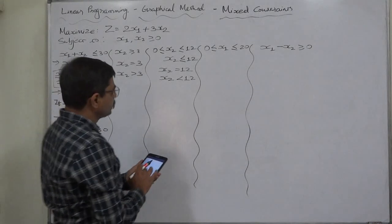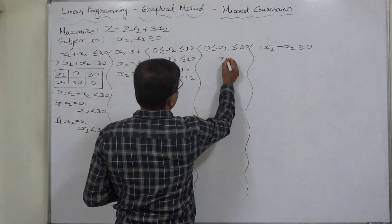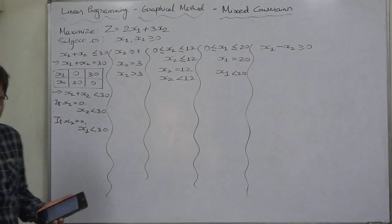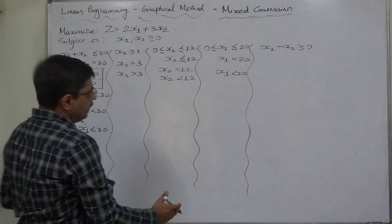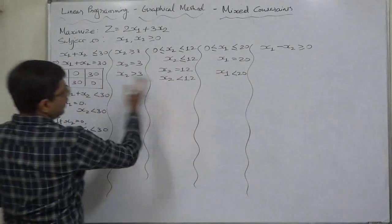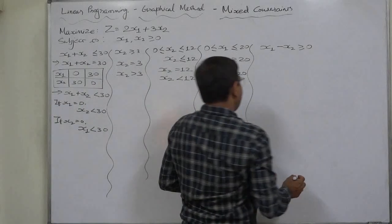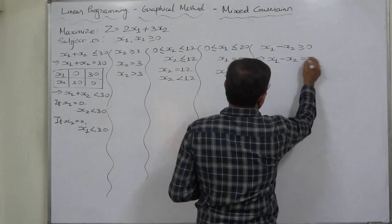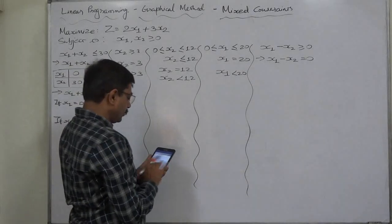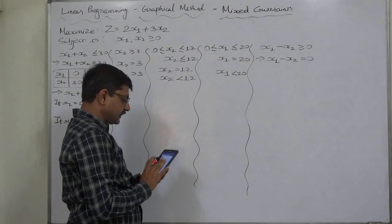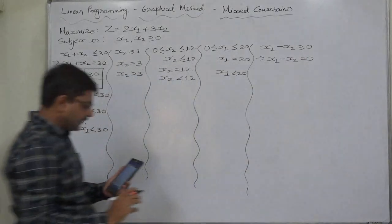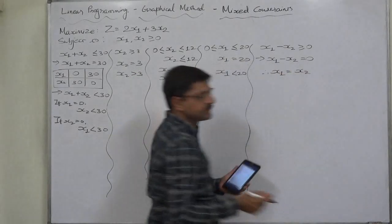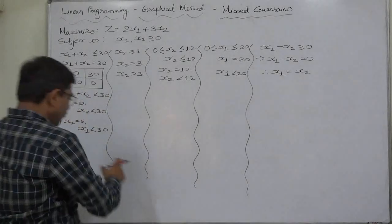0 less than or equal to x1 less than or equal to 20: the line passes through x1 equals 20, parallel to the x2 axis, with the region x1 less than 20 towards 0. The most interesting constraint: x1 minus x2 equals 0 — there is no mistake in writing that.